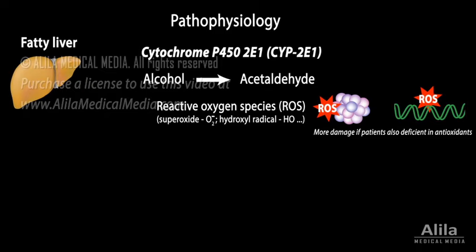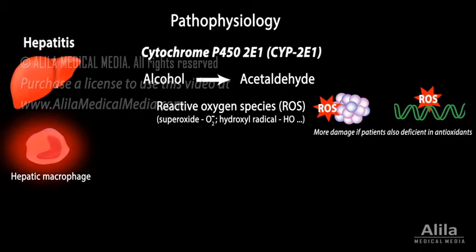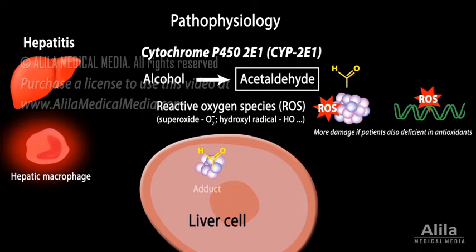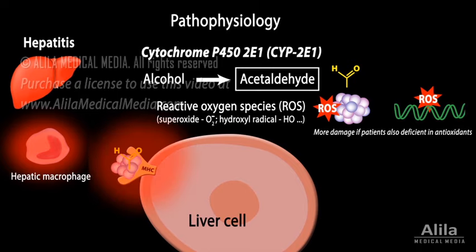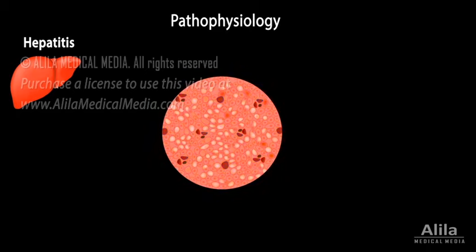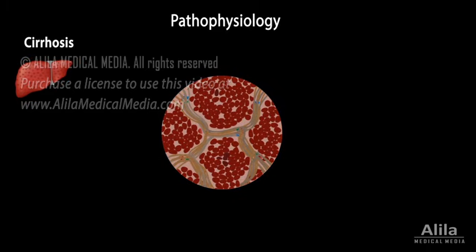Chronic alcohol exposure also activates hepatic macrophages, triggering inflammation. In addition, acetaldehyde can bind to cellular proteins, forming so-called adducts that are seen as foreign antigens by the immune system, provoking the body's inflammatory attacks. Chronic inflammation and subsequent attempts at tissue repair lead to formation of scar tissue. As a result, the liver's internal structure is disrupted, impairing its function.